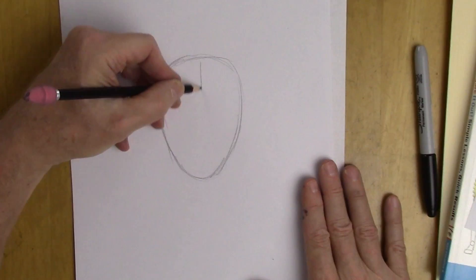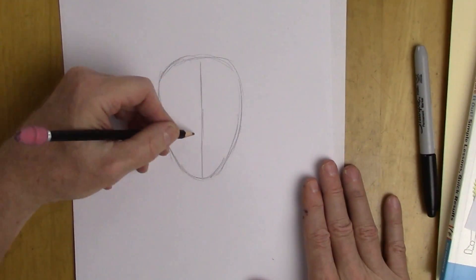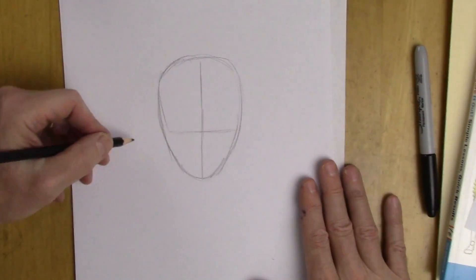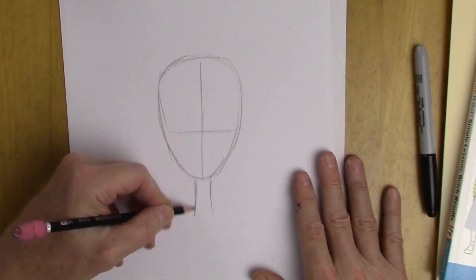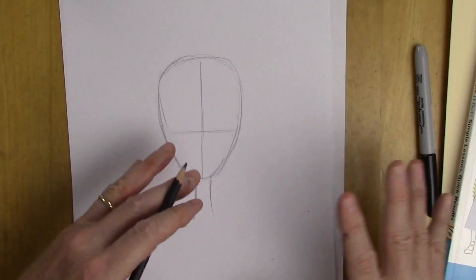Alright, so we will now put in the center line and the eye line right across here. Looks like a very normal character. I'll make the neck a little extra long so we're starting to see things happening.